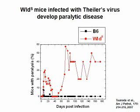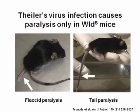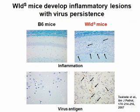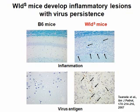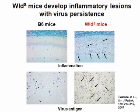So, this is opposite from what we saw in EAE. These are examples of WLD^S mice and B6 mice infected with Theiler's virus two weeks after infection. You can see flaccid paralysis of the hind limb on your left or paralysis of the tail on your right.